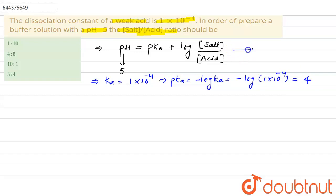Now putting the value of pH and pKa in equation 1, it will be 5 equals 4 plus log of concentration of salt divided by concentration of acid.